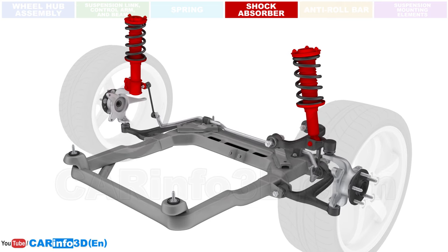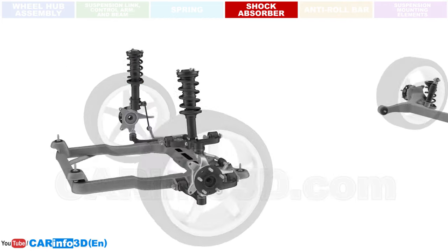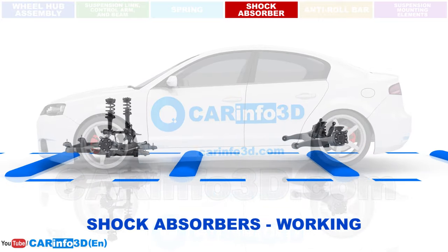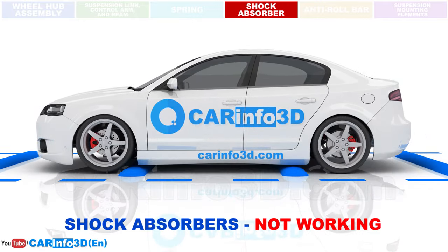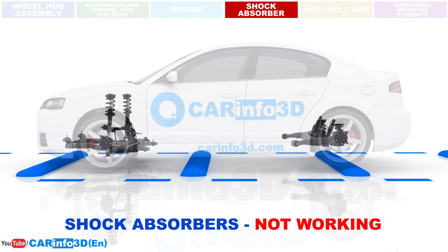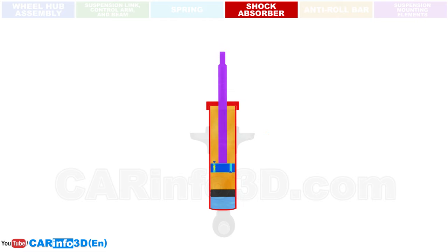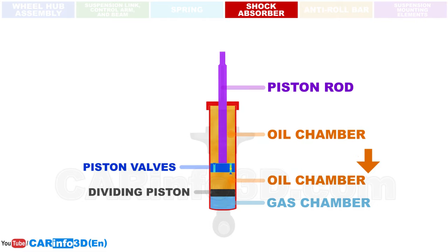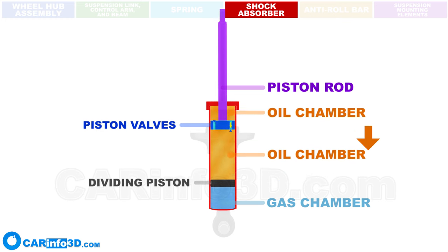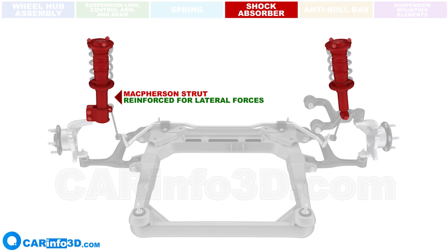Moving on to shock absorbers. Shock absorbers absorb and dampen vibrations and shocks, including spring oscillations that affect the body and the wheels, improving traction and comfort. You can see a suspension system with shock absorbers working. Without damping, the body begins to swing and the wheels experience vertical oscillations. A typical shock absorber for a passenger car is constructed as a telescopic tube with an oil-filled working cylinder. The piston valves allow oil to move from one chamber to another, and the resulting resistance dampens the oscillations. In a McPherson suspension system, the shock absorber also functions as a control arm; such shock absorbers are strengthened to withstand lateral forces and are known as struts.